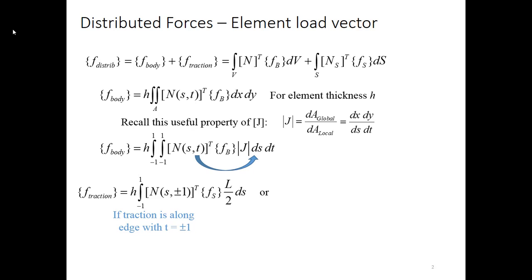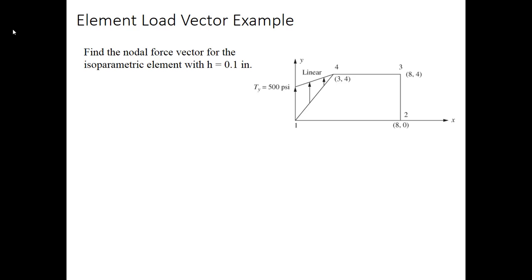For the surface traction, we can break this into surface tractions that act on the top or the bottom of the element, in which case t is equal to either plus or minus 1, or those surface tractions that act on the left or the right of the element, in which case s is equal to plus or minus 1. Let's do an example of this.